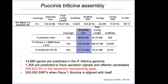Not only working on hexaploid wheat that is full of retro elements, I now work on a dikaryotic organism that is 50% repetitive. In this genome, we predicted about 15,000 genes, of which a little over 1,300 were predicted to have secretion signals — that's a huge effector complement. The interesting thing we saw is that if we took the Illumina data for race one and went back to the genome, there were still over 300,000 SNPs, indicating the two genomes in the two nuclei were quite different.